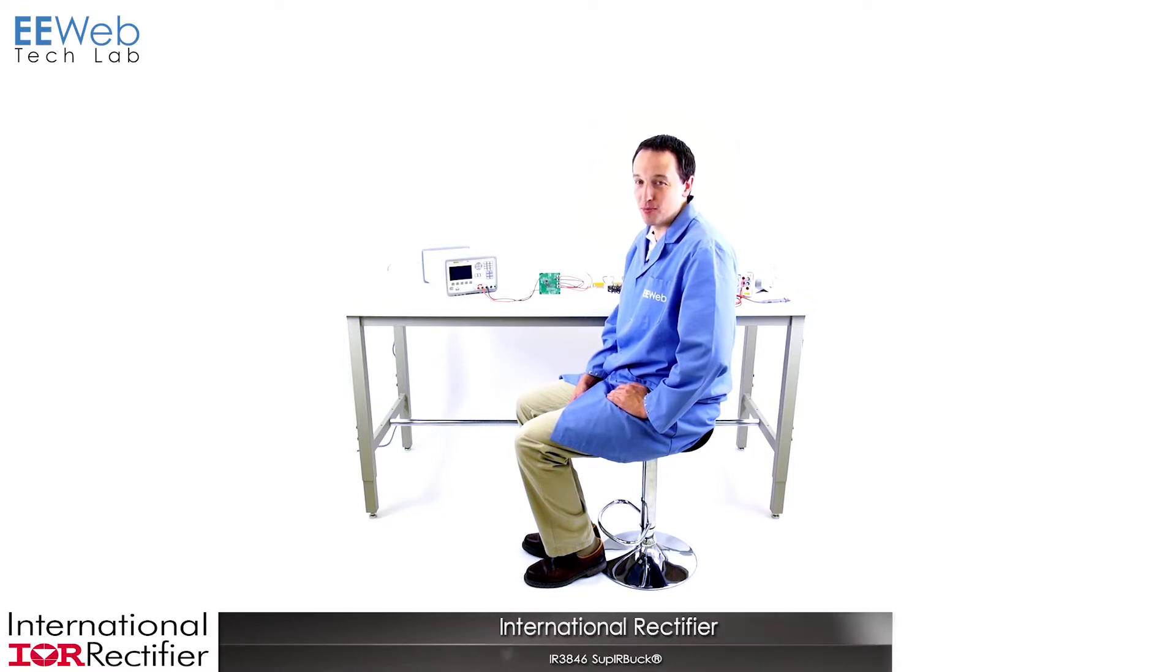IR refers to it as a super buck, which is appropriate because it's capable of 35 amps. It's highly integrated, easy to use, and a very efficient DC to DC regulator.